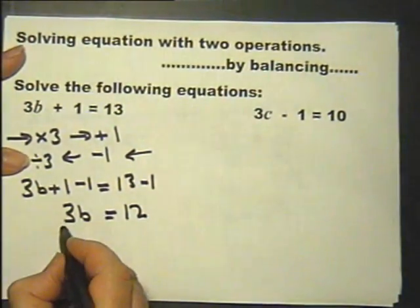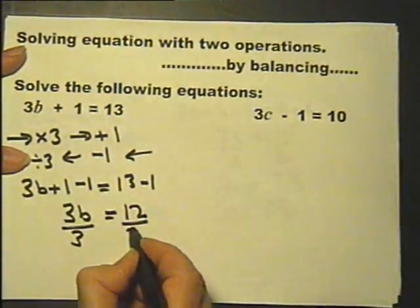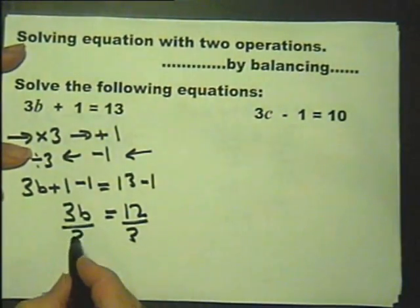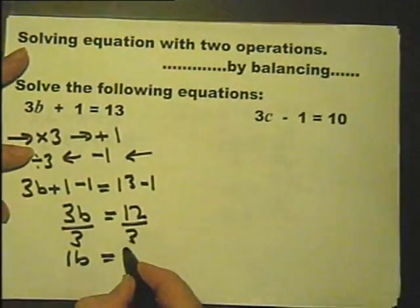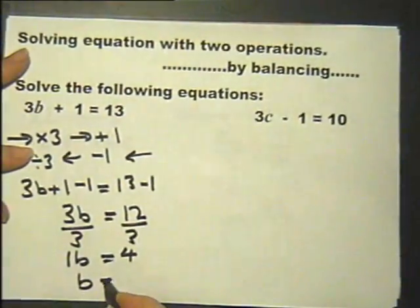Now this divide by 3 and we need to do it to both sides. 3b divided by 3 is 1b and 12 divided by 3 is 4 so b itself is 4.